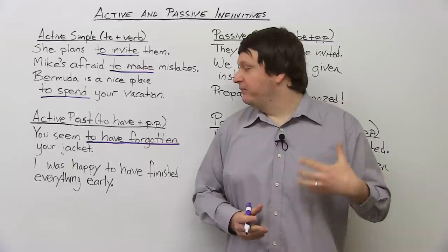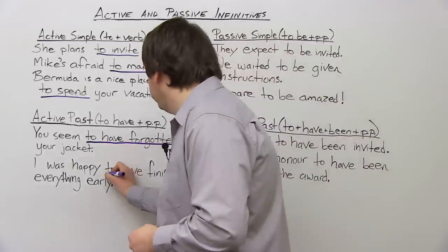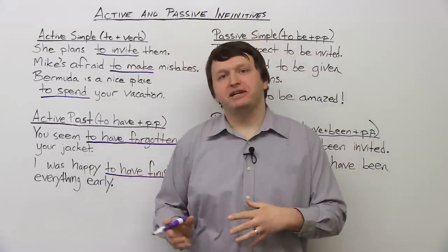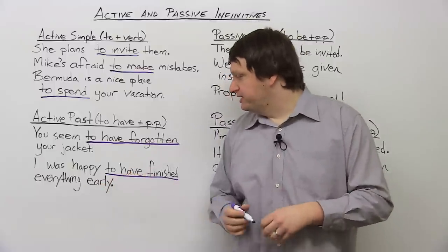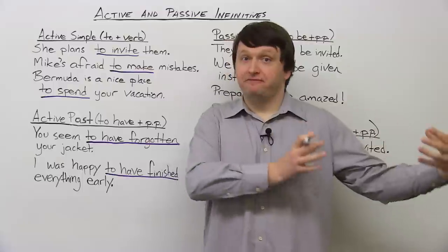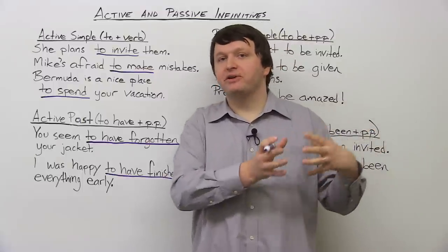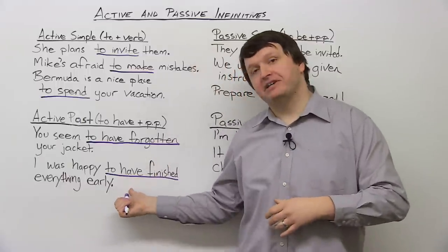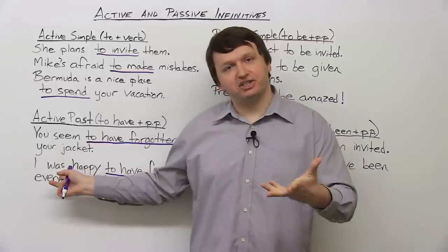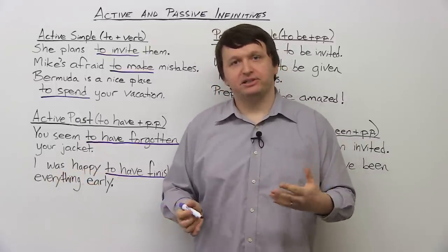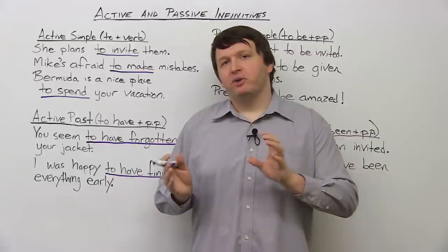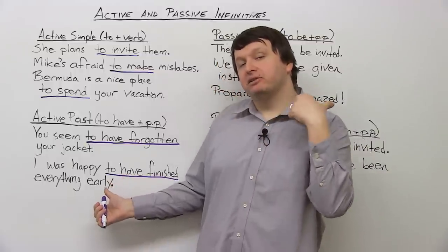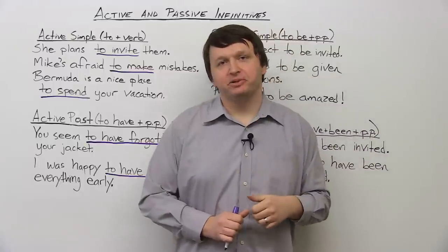The second sentence says: 'I was happy to have finished everything early.' You're almost using a past perfect structure, because the first action is 'I finished everything early' — whether studying, work, whatever it was — and then 'I was happy' after that. This is the first action and this is the second action. You can also say 'I was happy to finish everything early,' which is fine. But if you want to focus more on the order of actions, use 'to have' plus the past participle.